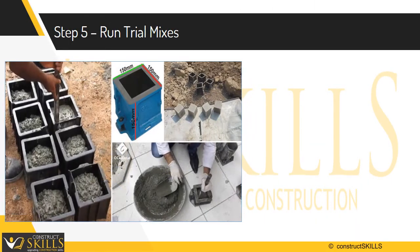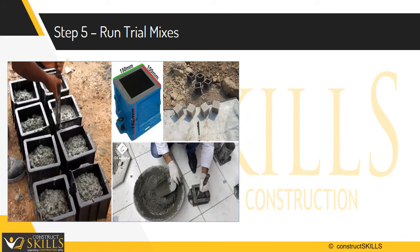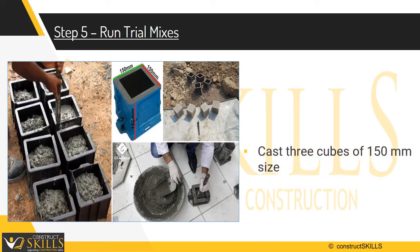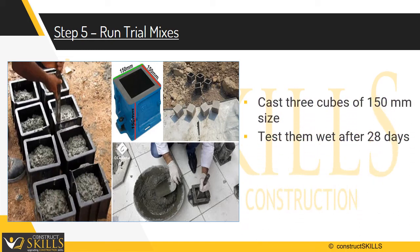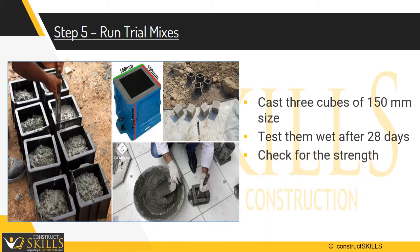Determine the concrete mix proportions for the first trial mix. Prepare the concrete using the calculated proportions and cast three cubes of 150 mm size, then test them after 28 days of moist curing and check for the strength. Prepare trial mixes with suitable adjustments until the final mix proportions are arrived at.